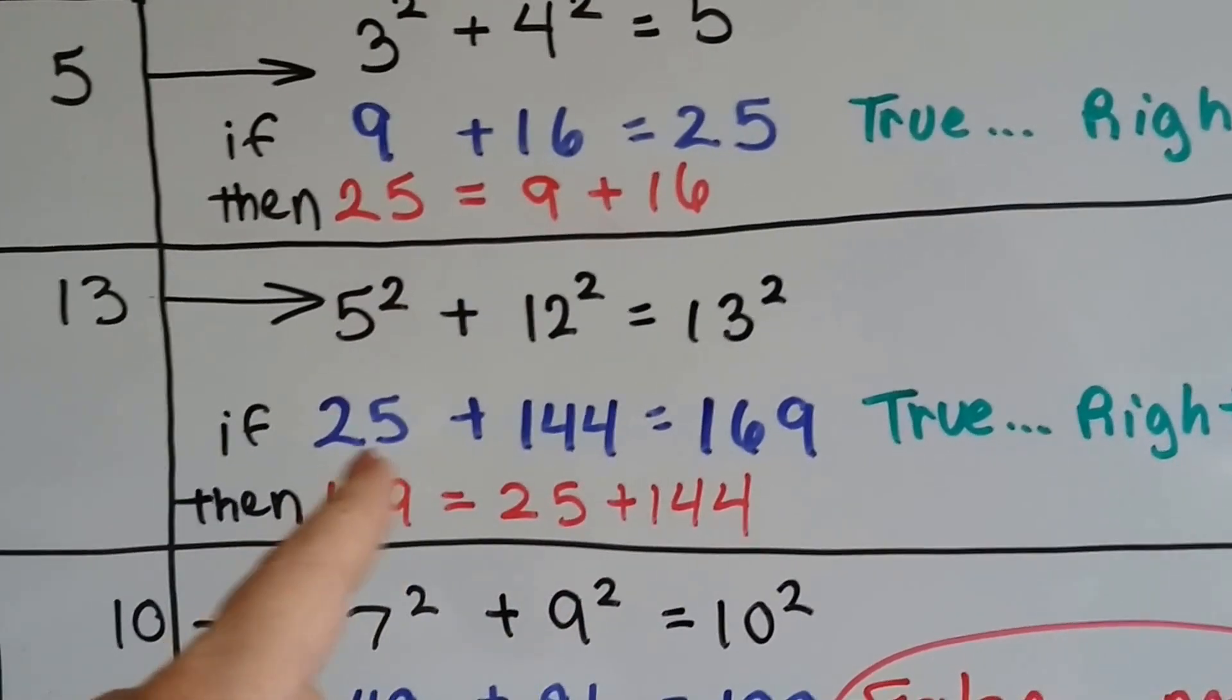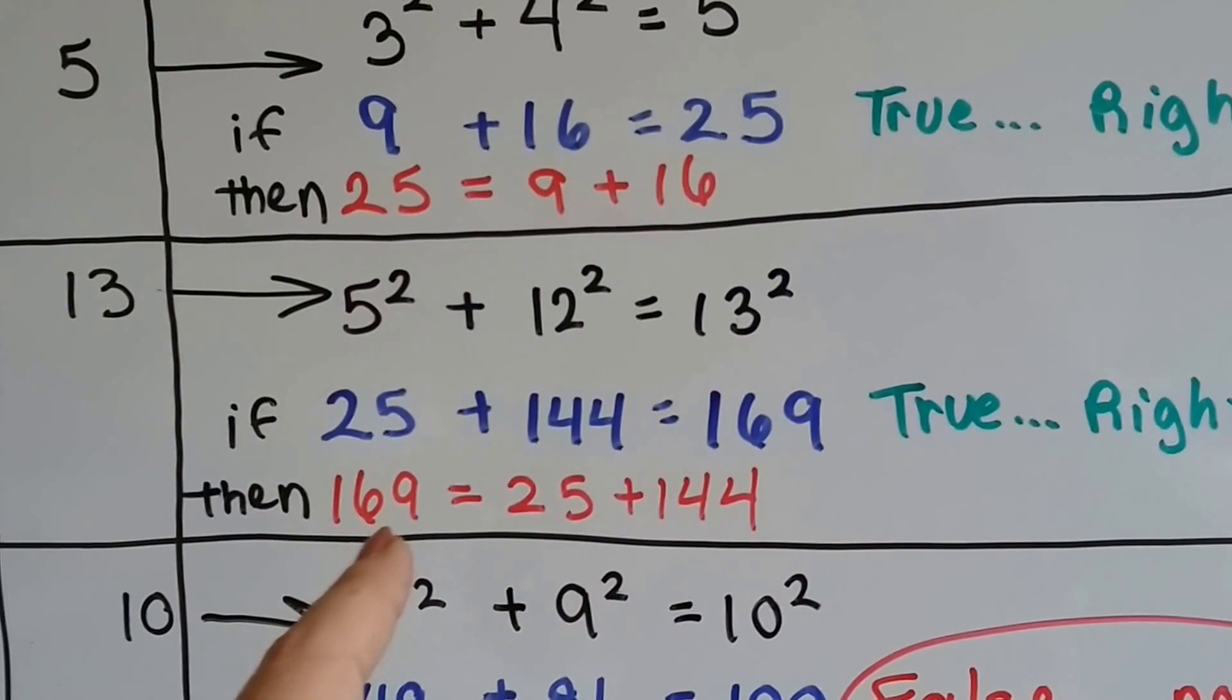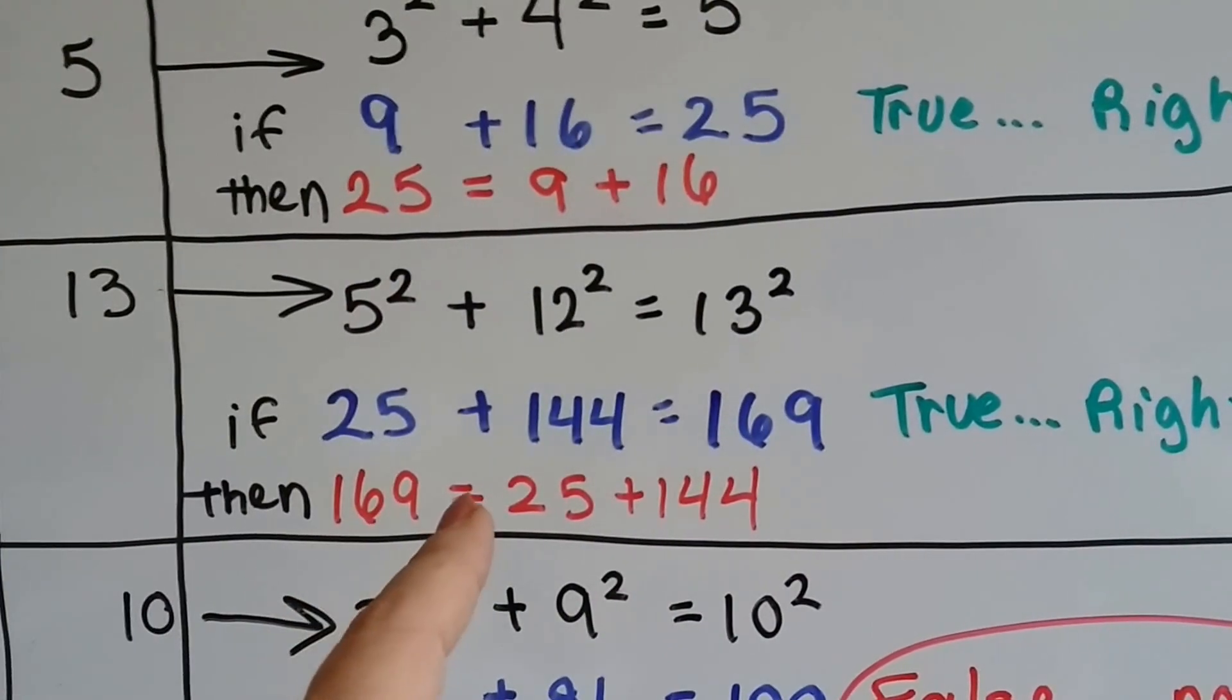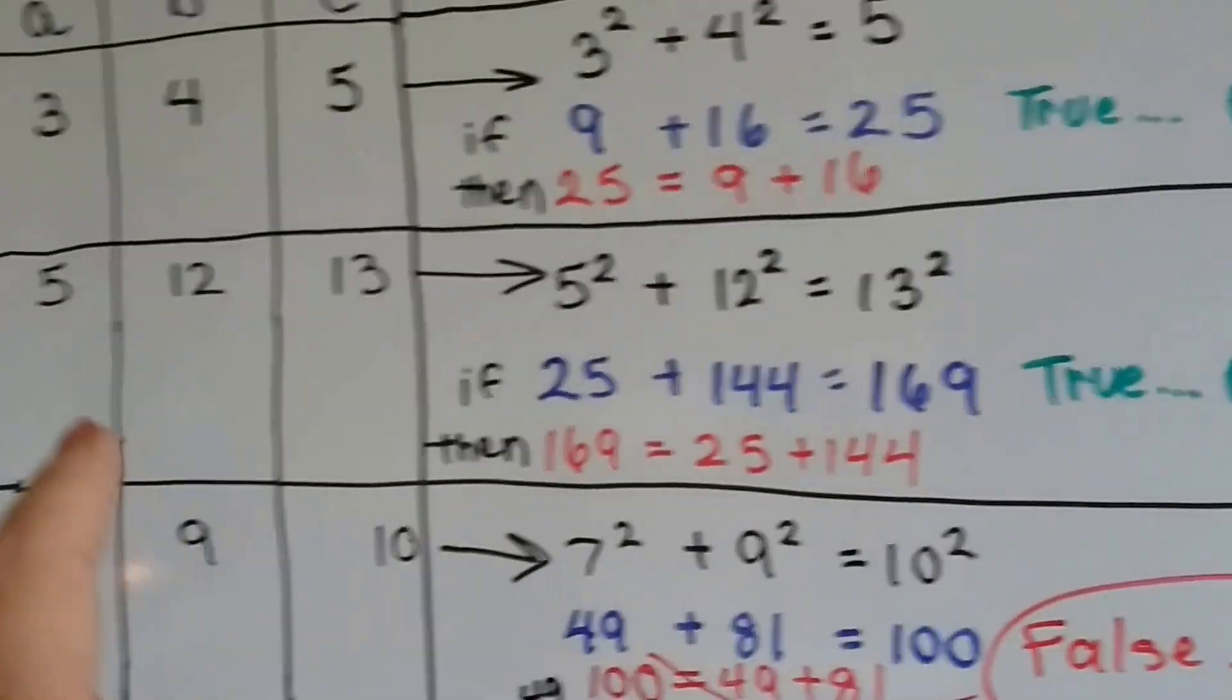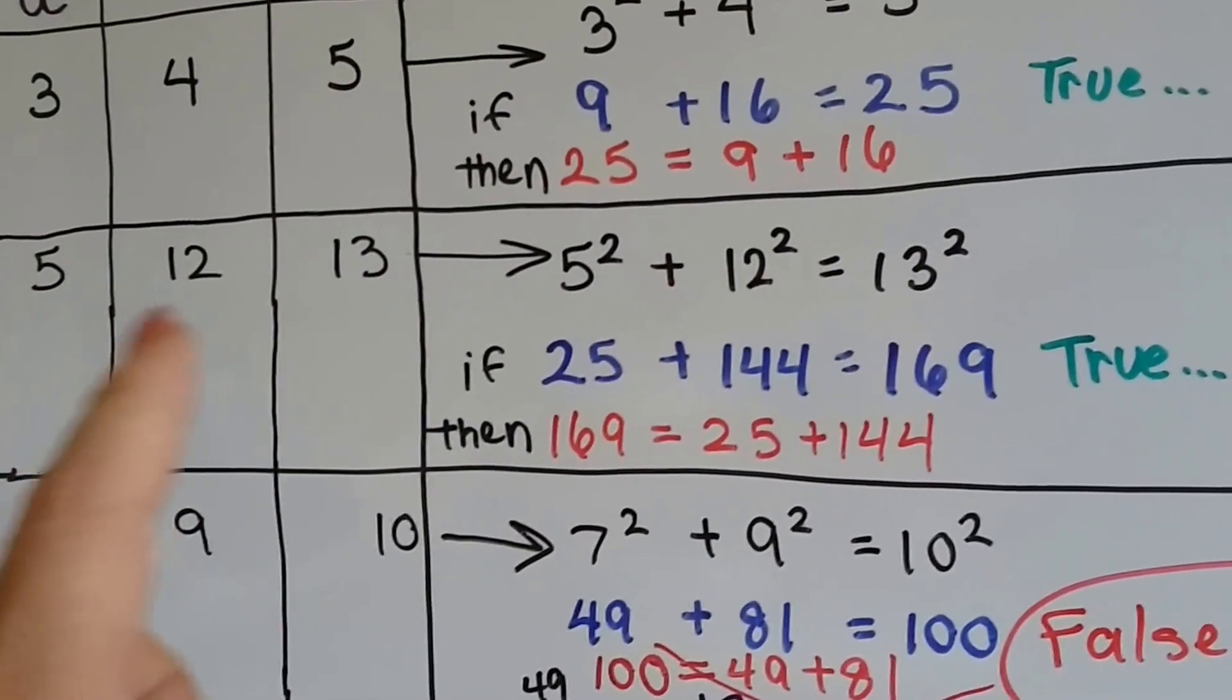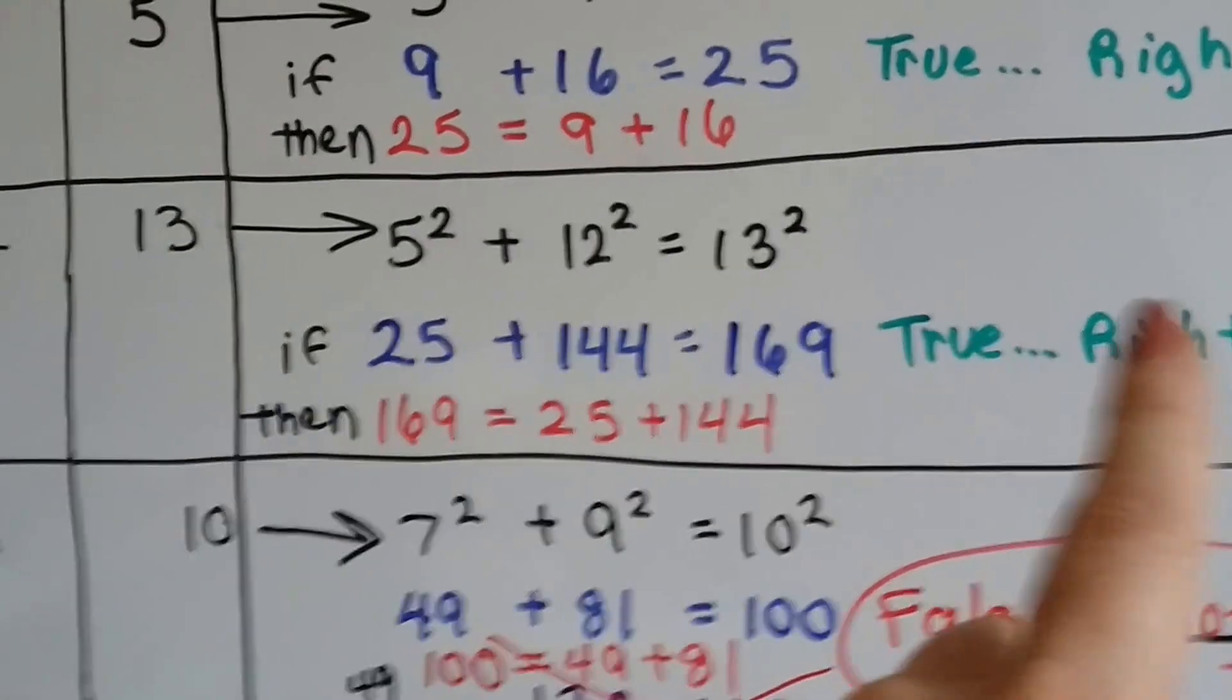144 plus 25 is 169, and that means that 169 is equal to 25 plus 144. So this is true. This is a right triangle. So if a, b, and c are 5, 12, and 13, we'd have a right triangle.